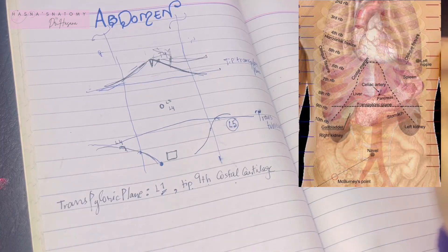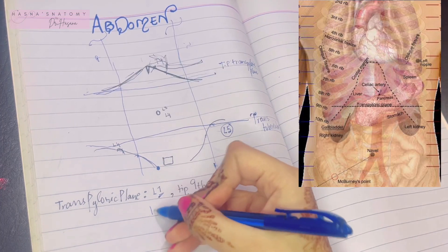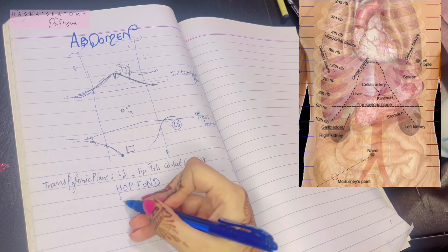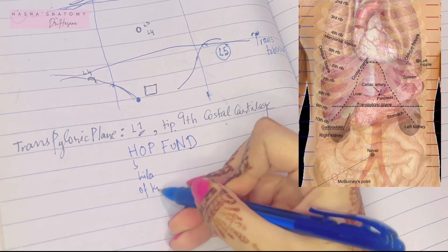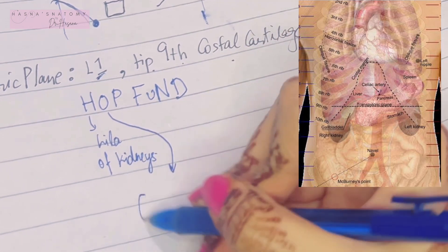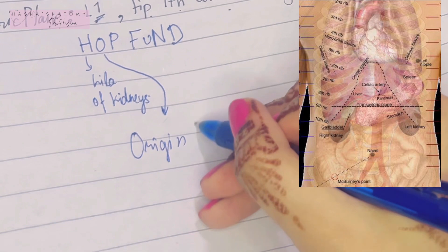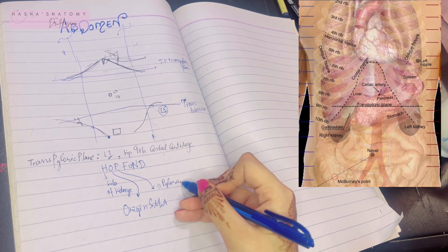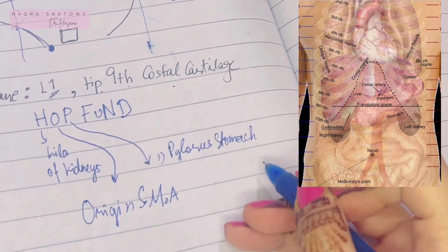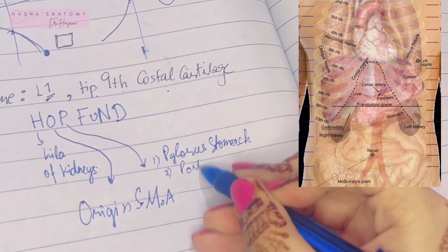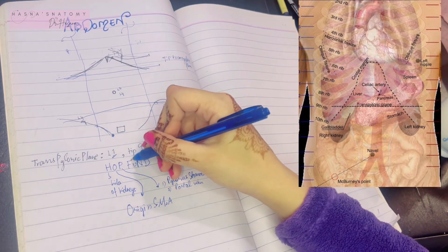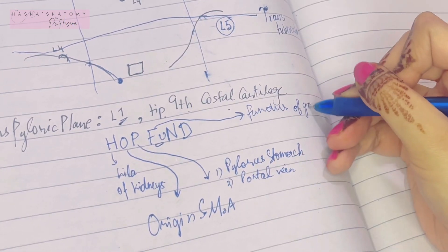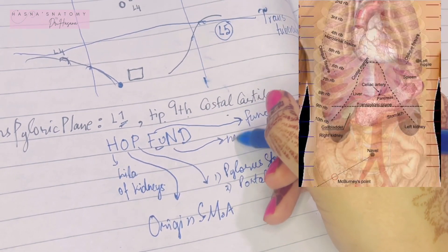It passes through the following structures, for which I have made a mnemonic: HOP FUND. H is for the hilum of the two kidneys. O is for the origin of the superior mesenteric artery. P is for two things: first, the pylorus of the stomach—hence why it's named the transpyloric plane—and second, the portal vein, the hepatic portal vein. Then we have F, U: the fundus of gallbladder. N is for the neck of the pancreas, and D is for the duodenal-jejunal junction.